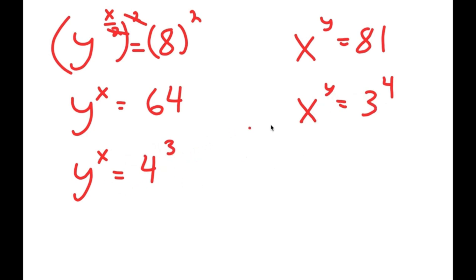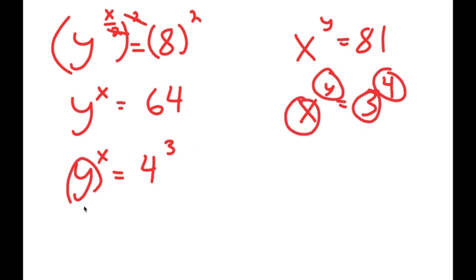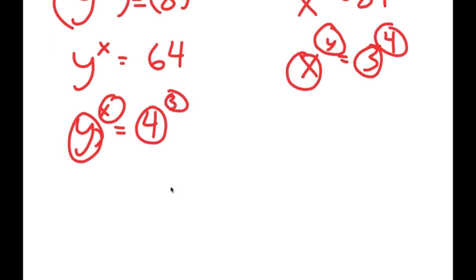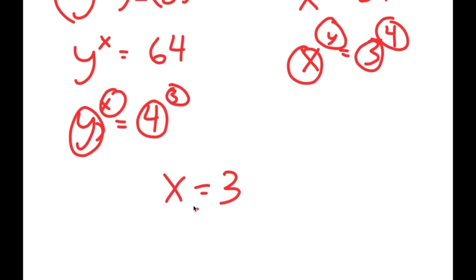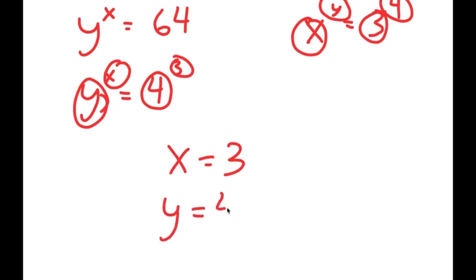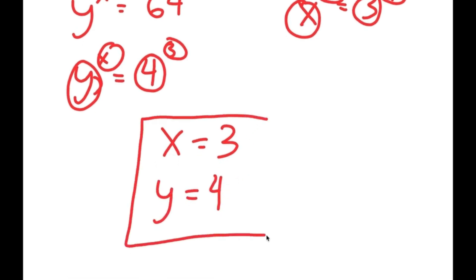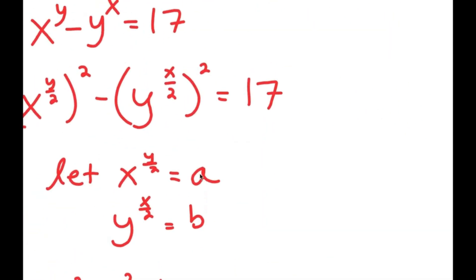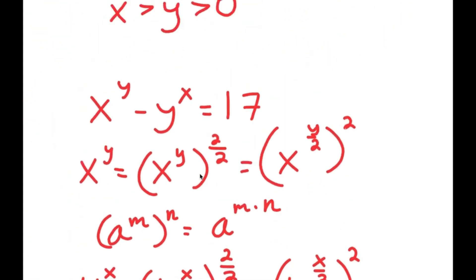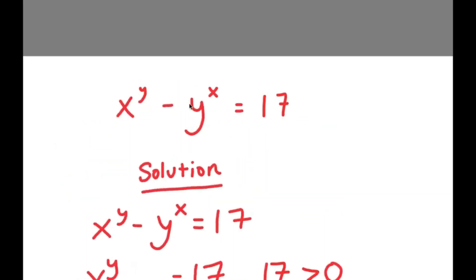So I have x to the power of y equals 3 to the power of 4 and y to the power of x equals 4 to the power of 3. Matching the bases and exponents, x equals 3 and y equals 4. So this is my solution to this equation.